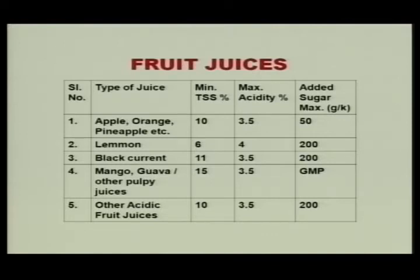Mango, guava, or other pulpy juices: minimum total soluble solid 15%, maximum acidity 3.5%, and added sugar should be as per good manufacturing practices. Other acidic fruits like amla, jamun, etc.: minimum TSS 10%, maximum acidity 3.5%, and maximum added sugar 200 g/kg.